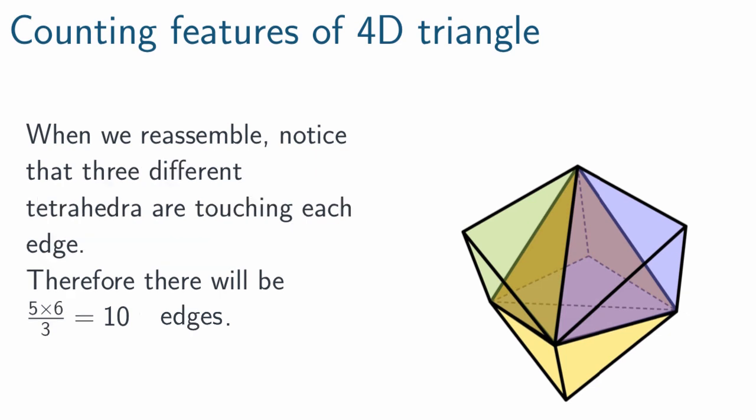Now, take a look at any edge of this shape. That very center tetrahedron, the one that originally was an orange color, will be touching that edge. And so will two other tetrahedra. No matter where you look on this shape, we can identify exactly three different tetrahedra that touch the edge. So I have to take 5 times 6 and divide it by 3 to get the number of edges.